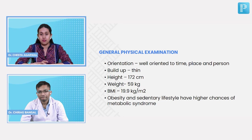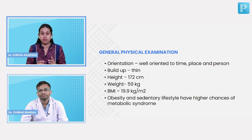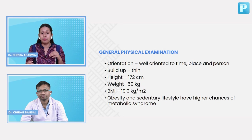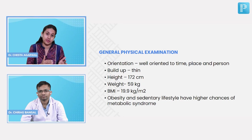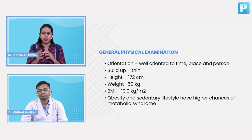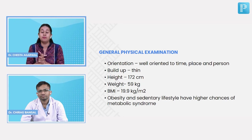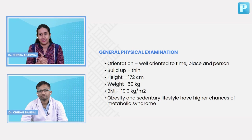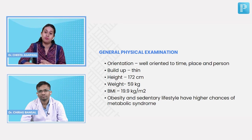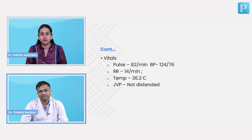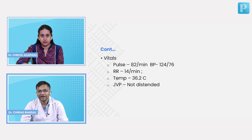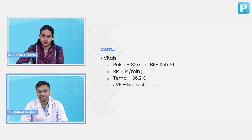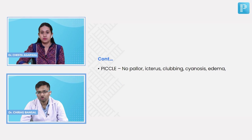A very obese or stout built patient who is not very active is more prone to metabolic syndrome. Always look for comorbid conditions in psoriasis patients. Vitals: pulse 82 per minute, blood pressure 124/76 mmHg, respiratory rate 14 per minute, temperature 36.2°C, JVP not distended. No pallor, icterus, clubbing, cyanosis, or edema.